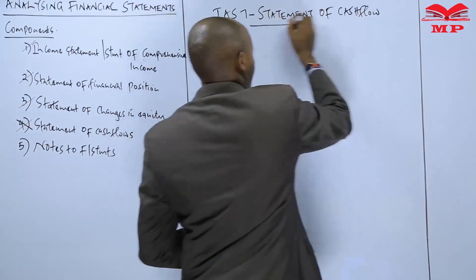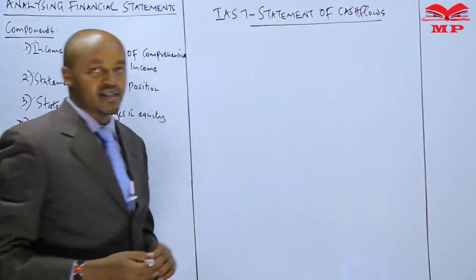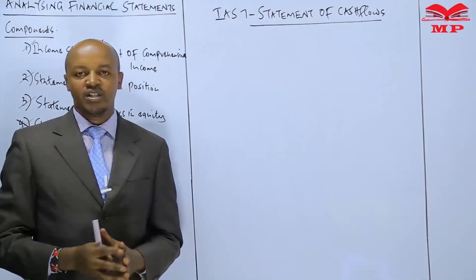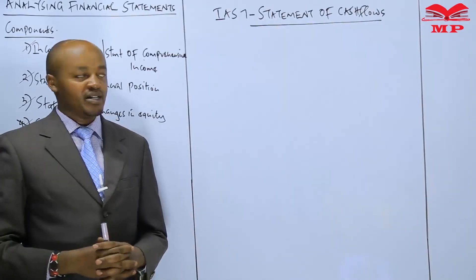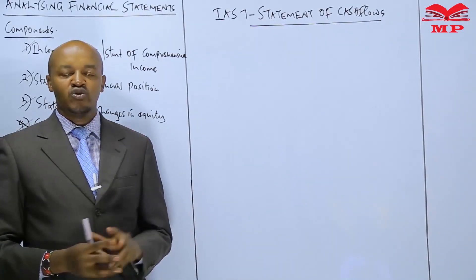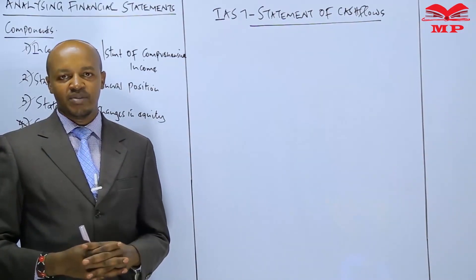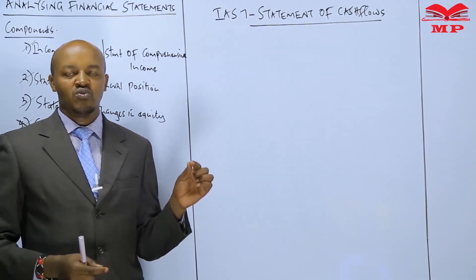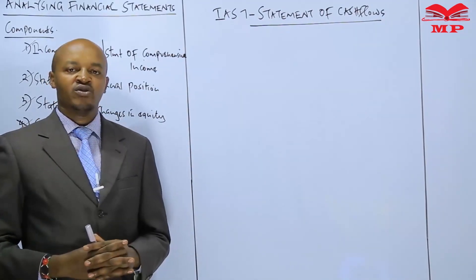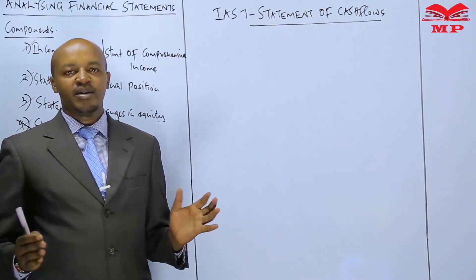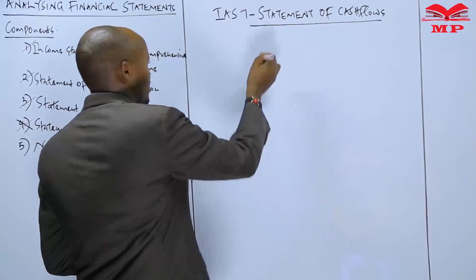When we talk about a statement of cash flow, we say that this is a component of the financial statement which is prepared by an entity or a company at the end of the year, to show the various sources of cash in a business. Whenever a statement of cash flow is to be prepared, it is supposed to be prepared in accordance with IAS 7.